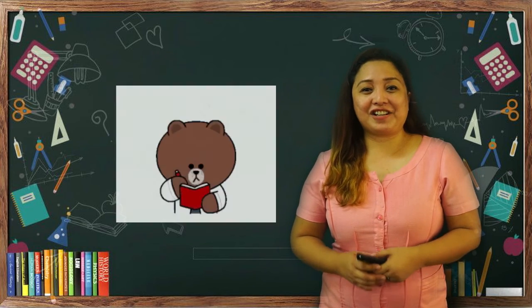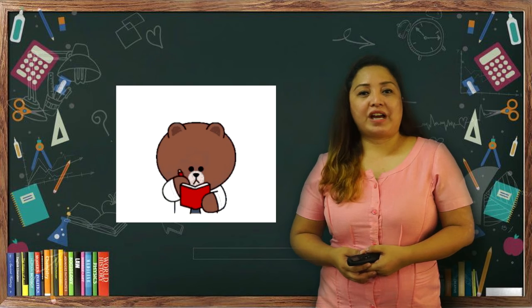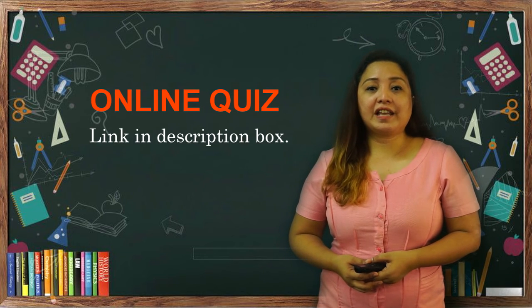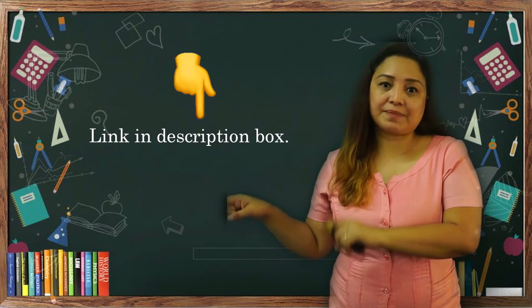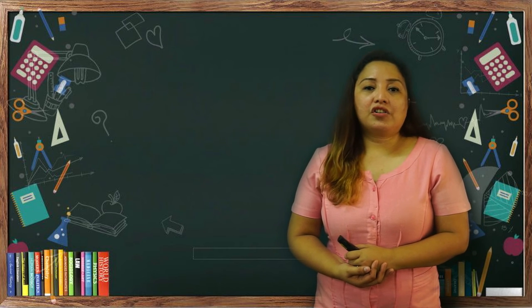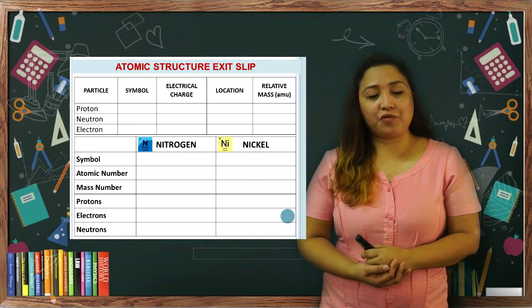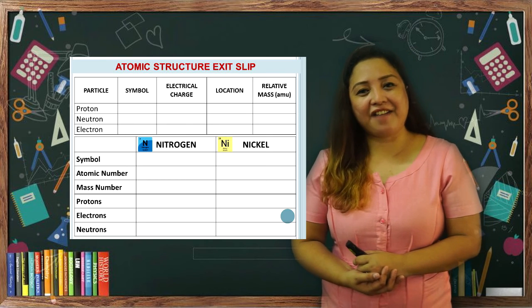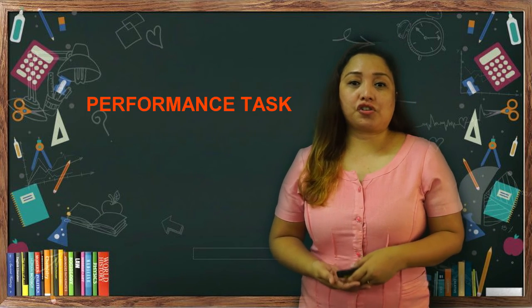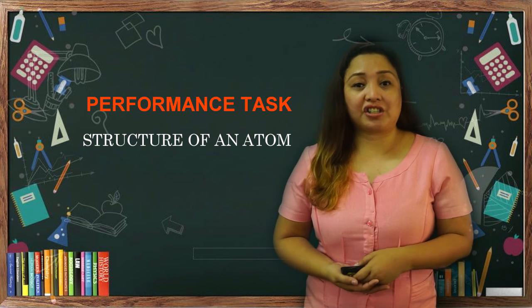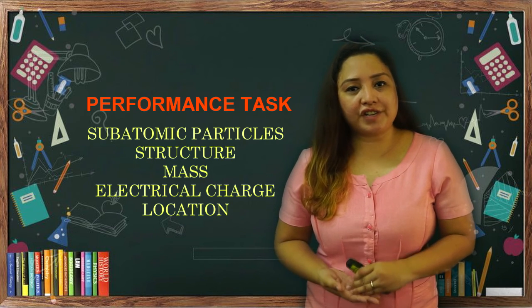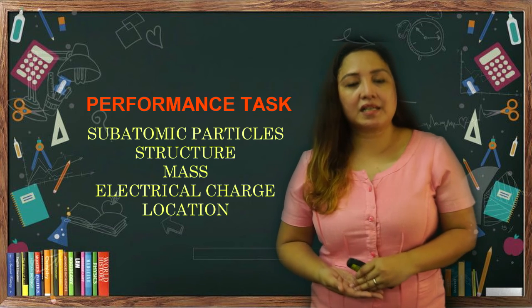To check if you got our lesson for today, I'm going to give you an exit slip. For those who have internet access, you are going to take an online quiz — the link is in the description box below, just click it. For those who have no internet access, answer the given exit slip together with your activity sheets and have it submitted together with your modules when you return. For your performance task, you are going to choose one of the projects listed about the structure of an atom. Make sure to include all information: the three subatomic particles, their masses, their electrical charge, and their location.